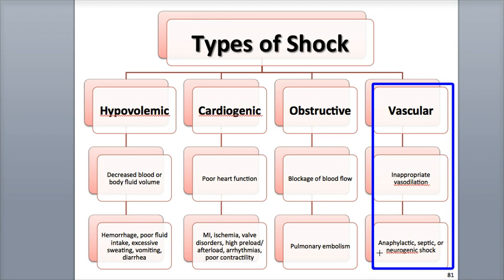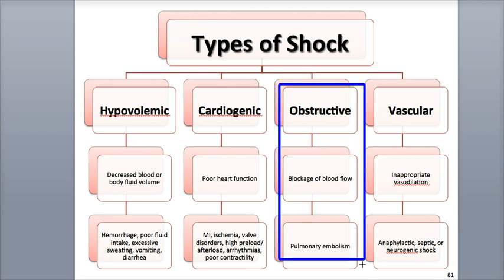Septic shock, the leading cause of death in hospital intensive care units, is due to vasodilation induced by toxins produced by bacterial infection. Obstructive shock is the result of a blockage in circulation, such as a pulmonary embolism in the lungs' blood vessels.